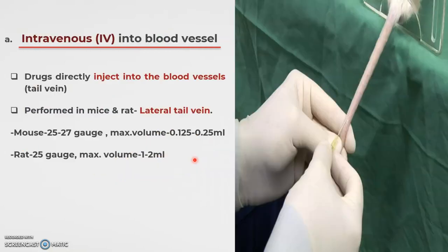For the intravenous route, the drug is directly injected into the blood vessels — specifically into the lateral tail vein of the animal. Place the animal in the chamber and dip the tail into warm water or clean it with cotton to dilate the vessels. Warm water helps visualize where the veins are present, making it easier to insert the needle into the vein.